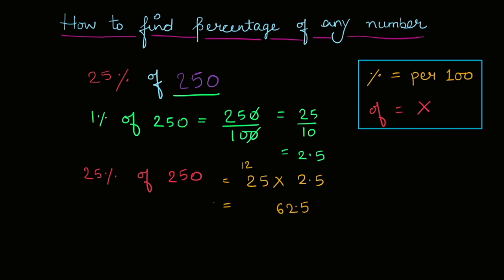Aur agar ab isko direct calculation karte, toh bhi yeh answer aayega. So twenty-five percent, main aapko karke dikhati. Twenty-five percent of two hundred fifty is what? Twenty-five percent - toh percent ko we replace by hundred divide, and 'of' by multiply sign, and then two fifty. So one zero in numerator is cut by one zero in denominator.